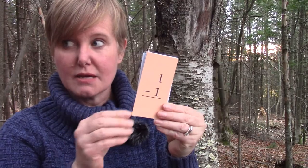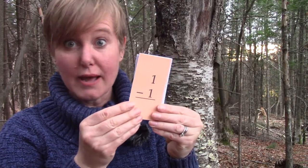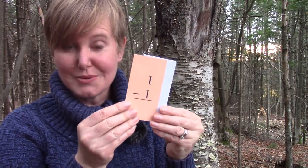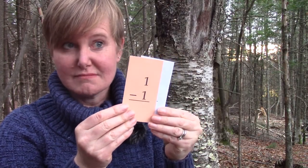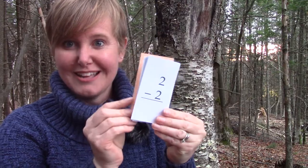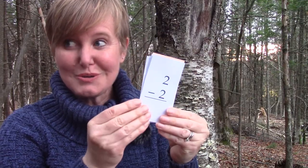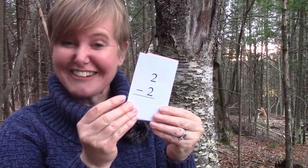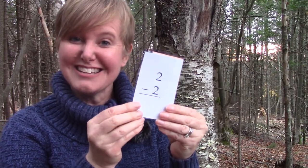If we have one, we're going to take away everything. We're going to take away one, so our answer is zero. If we have two, we're going to take away two, and our answer will be zero.